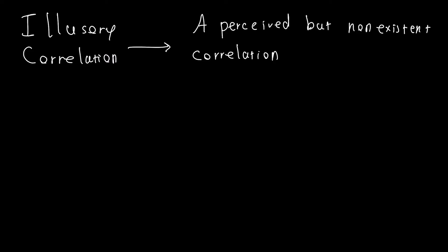In this video we're going to talk about illusory correlations and why they happen. An illusory correlation is a perceived but non-existent correlation - a person believes there is a correlation but there actually is not.